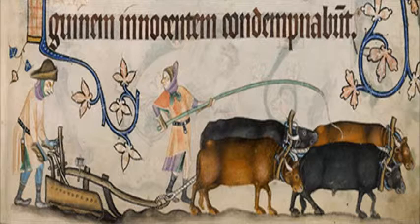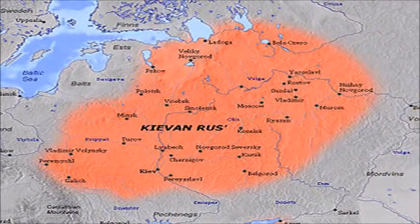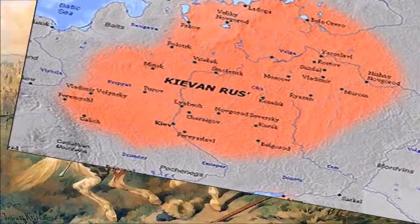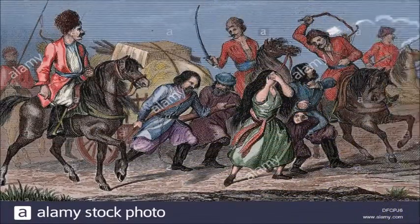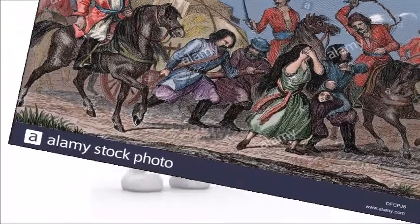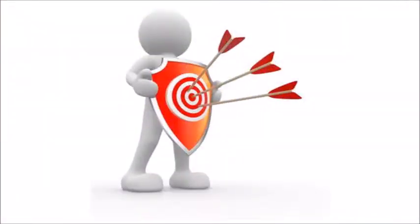Serfdom was a system where peasants, or lower class people, worked the agrarian properties of nobles, or the upper class of society. While early variations of the system allowed more mobility for serfs, the destruction of the early Russian state, the Kievan Rus, by the Tatars — a group of people akin to the Mongols — made serfdom a far more permanent fixture in Russian society. During this period of devastation, serfs became ever more reliant on the nobles for protection, as they were displaced from their homes in more rural areas.